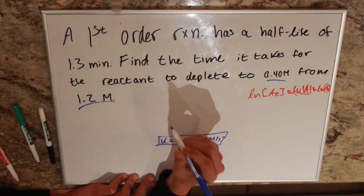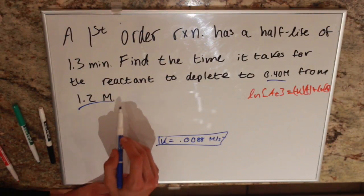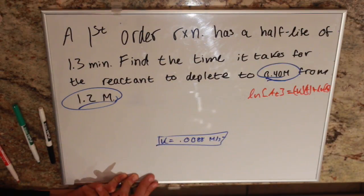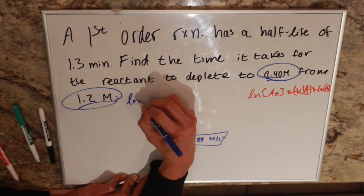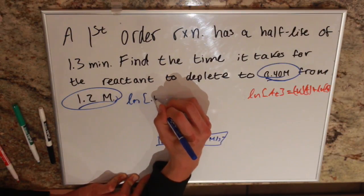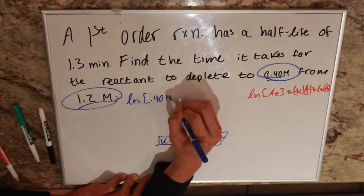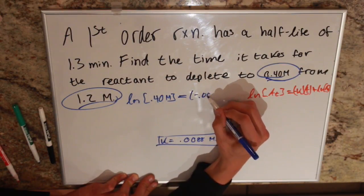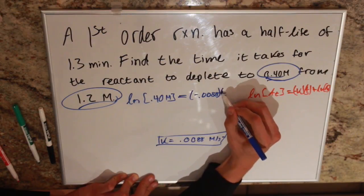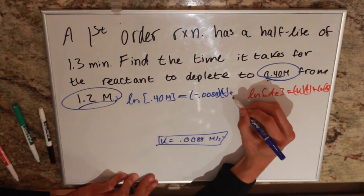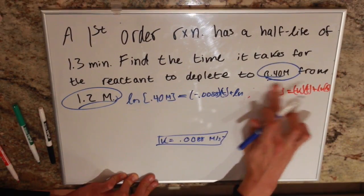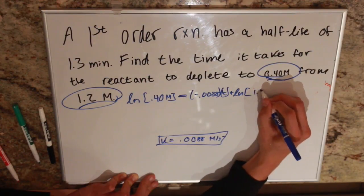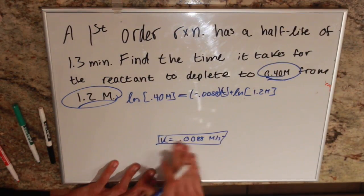We start plugging in values. Our initial concentration is 1.2 moles, and our concentration after time is 0.4 moles. So we have natural log of 0.4 equals negative 0.008 times t plus natural log of 1.2 moles.